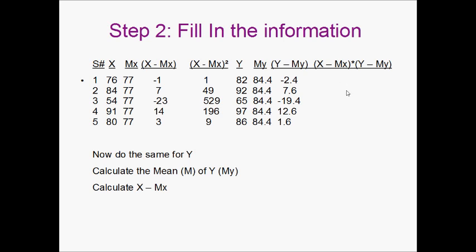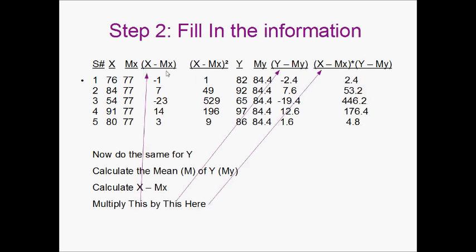The only thing different is, at the end of here, we're going to take the product of X minus mean of X and Y minus mean of Y. And we're going to multiply these two rows of numbers. So negative 1 times negative 2.4 is 2.4. 7 times 7.6 is 53.2. Negative 23 times negative 19.4 is 446.2. 14 times 12.6 is 176.4. And 3 times 1.6 is 4.8.